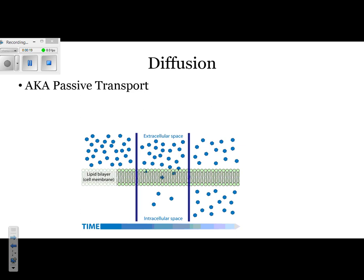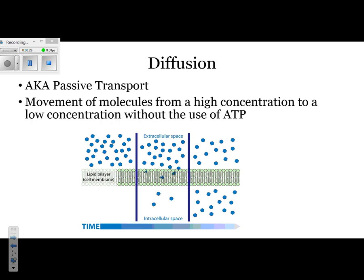Remember, with passive transport or diffusion, we're talking about molecules moving from a high concentration to a low concentration. It's kind of like going downhill. Since it's like riding a bike downhill, that means you're not using any energy. Our fancy name for energy is ATP.